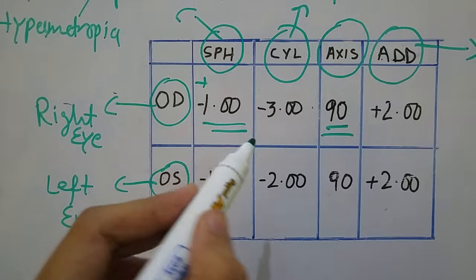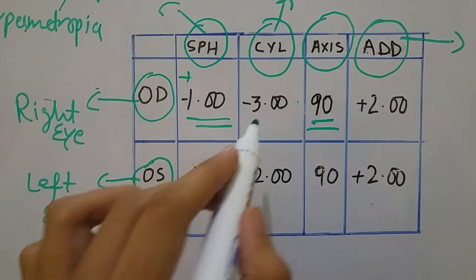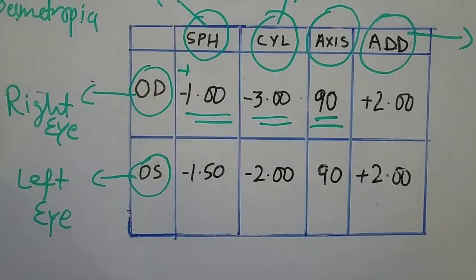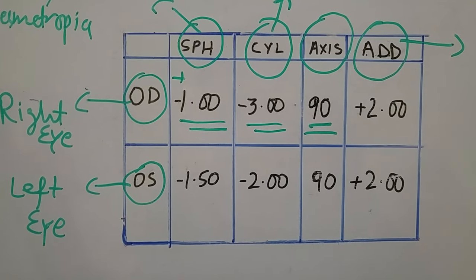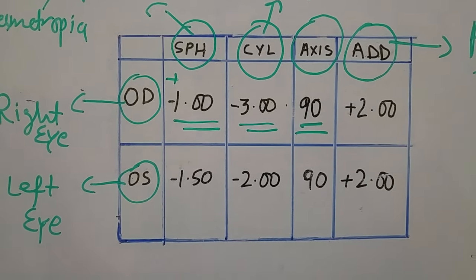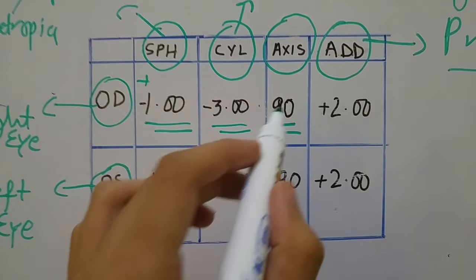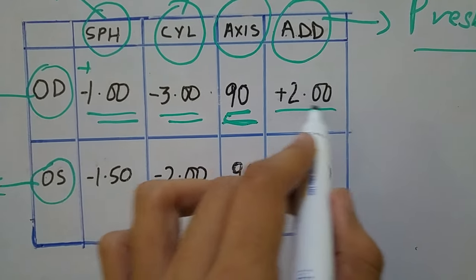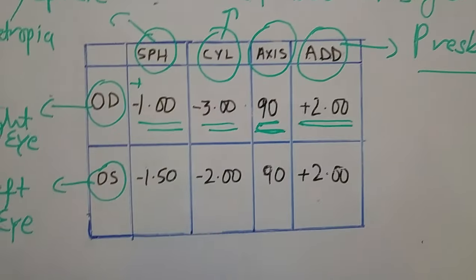Then cylinder: in case you have astigmatism, then you will see here cylinder and minus and plus indicates whether minus cylinder is prescribed to you or a plus cylinder is prescribed to you, and then there are the axis of the cylinder. And there is a near addition which in this example is plus two.